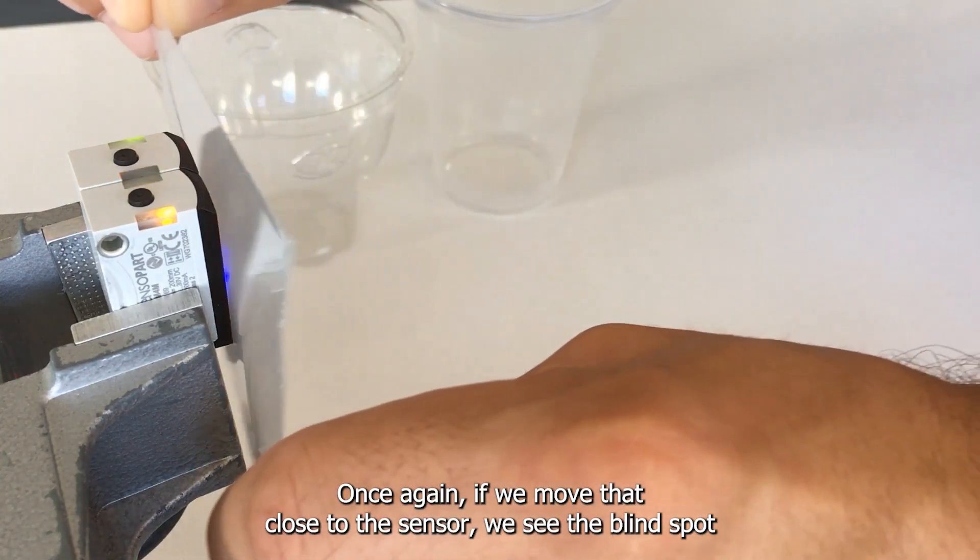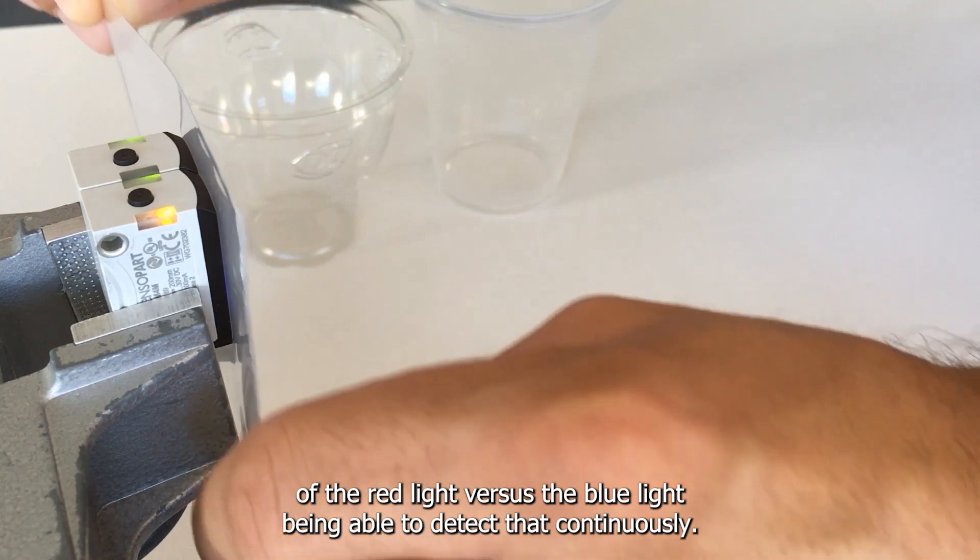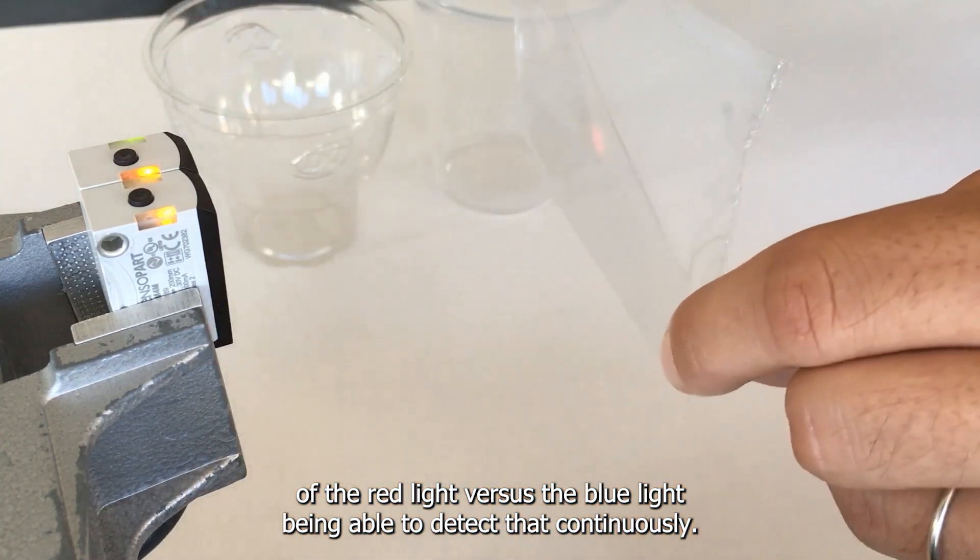Once again, if we move that close to the sensor we see the blind spot of the red light versus the blue light being able to detect that continuously.